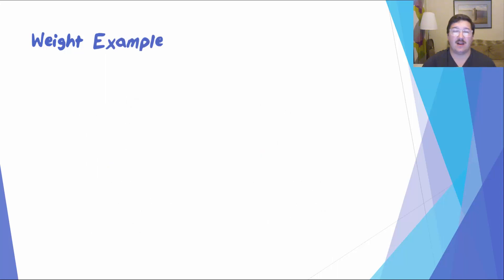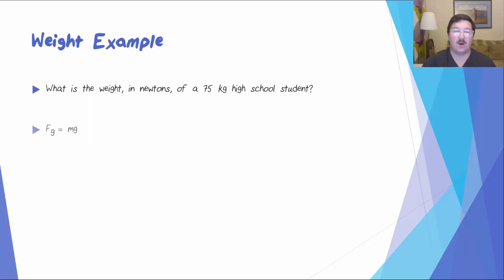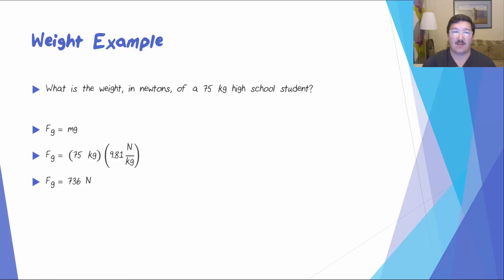Let's take a look at an example of a weight problem. What is the weight in newtons of a 75 kilogram high school student? Starting with the equation Fg equals mg, we plug in 75 kilograms and 9.81 newtons per kilogram, and find that a 75 kilogram high school student weighs 736 newtons.